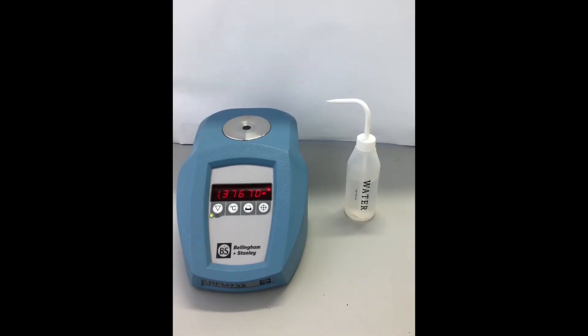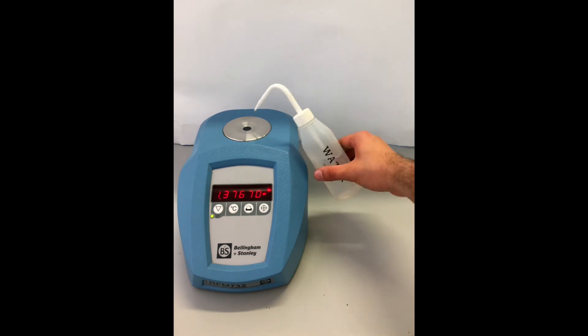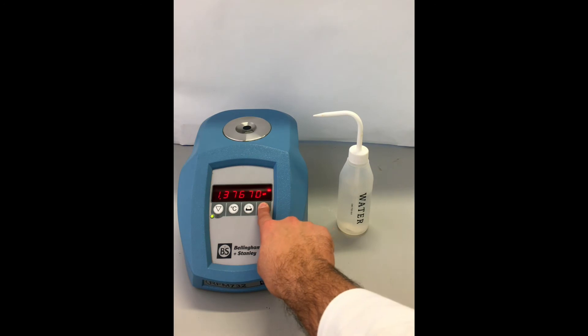If another figure is displayed, you need to inform a technician and recalibrate the refractometer. To recalibrate, add distilled water and then press and hold the calibrate key for 2 seconds until you see Cal? displayed.